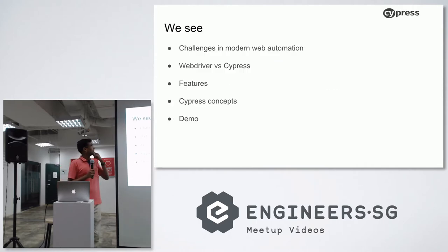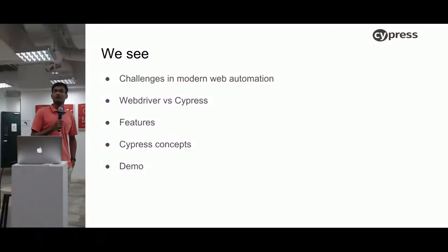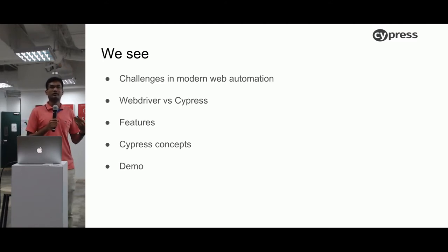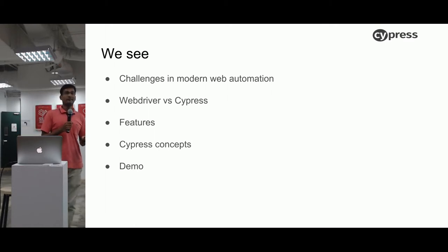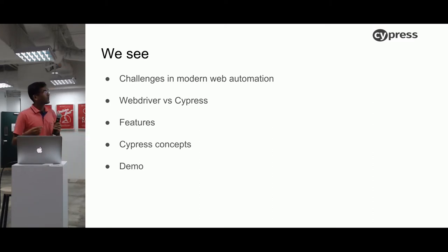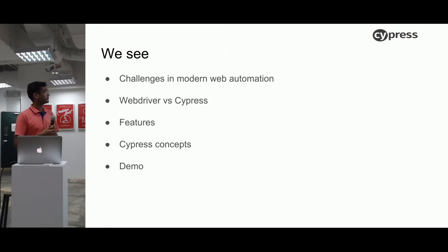I would like to talk about the challenges in modern web automation. Open source-wise, we started with Selenium RC, but now we have a lot going on in web automation — especially on the JavaScript side. Most of us will be familiar with WebDriver, so I would like to compare WebDriver with Cypress, how it compares. And then some key features in Cypress that really stand out, other basic concepts, and if possible, a demo. Hope it doesn't break.